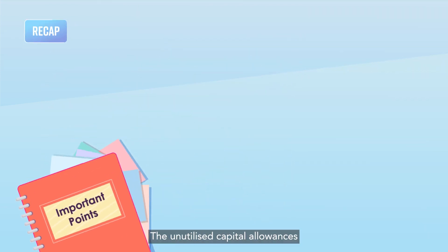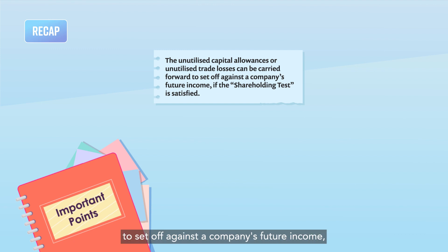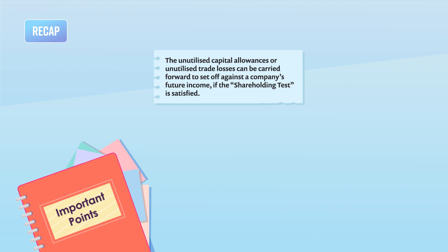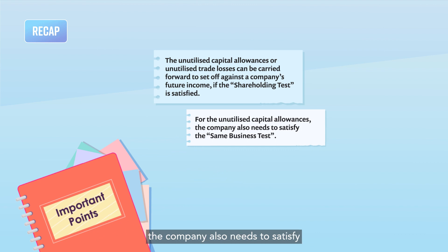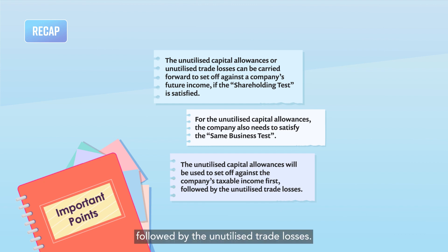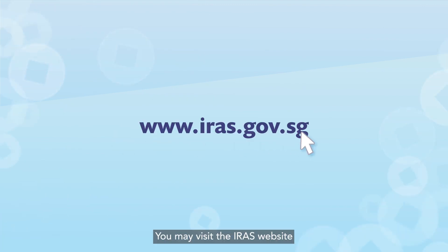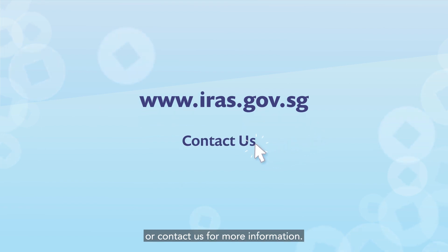The unutilised capital allowances or unutilised trade losses can be carried forward to set off against a company's future income if the shareholding test is satisfied. For the unutilised capital allowances, the company also needs to satisfy the same business test. The unutilised capital allowances will be used to set off against the company's taxable income first, followed by the unutilised trade losses. You may visit the IRAS website or contact us for more information.